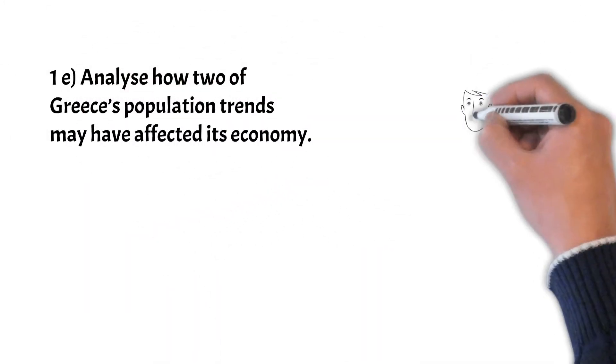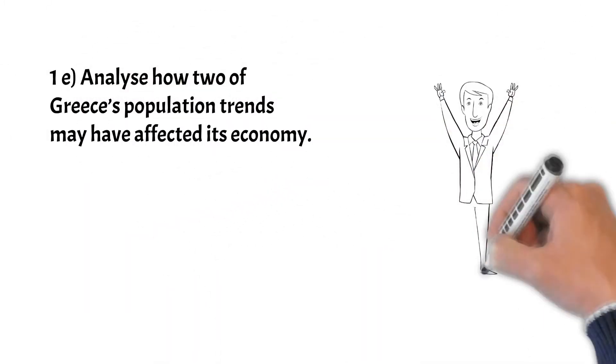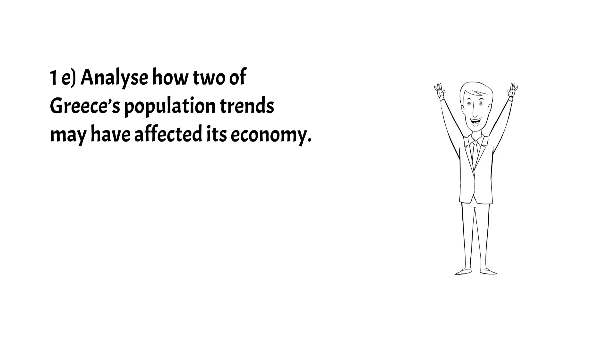Next, question 1e: analyze how two of Greece's population trends may have affected its economy. Okay, they want us to find something and then explain the outcome of this. In the third paragraph they mention three things and we only need to talk about two. The Greek population has been falling ever since 2010 resulting in a smaller labor force. Secondly, an aging population which would cause an increase in dependency ratio. Thirdly, emigration which would result in the loss of skilled workers.